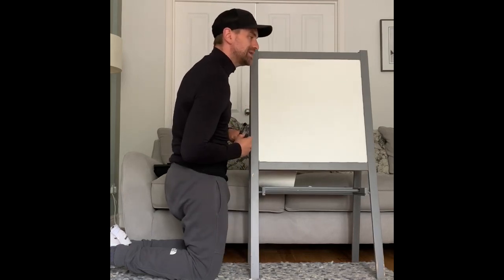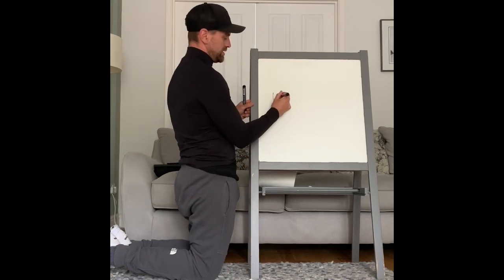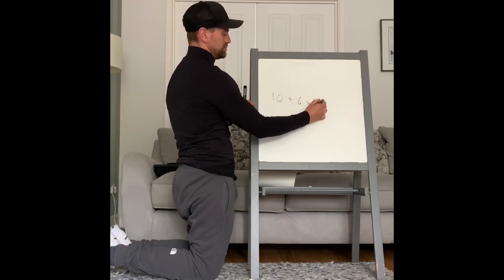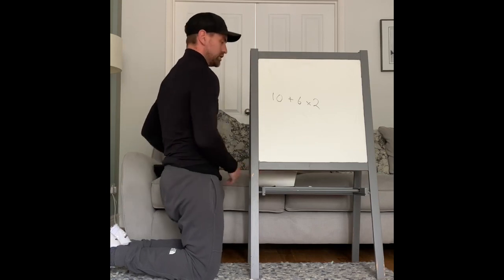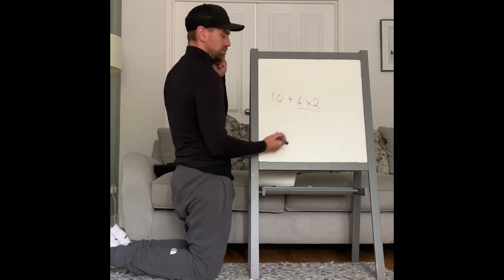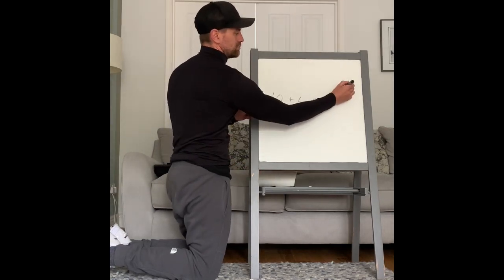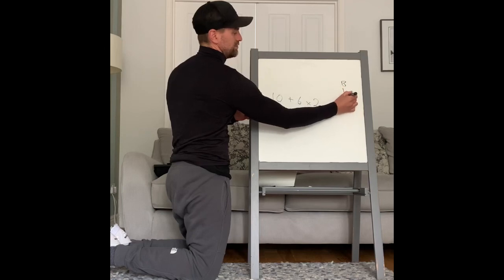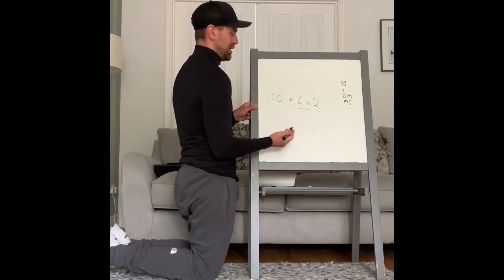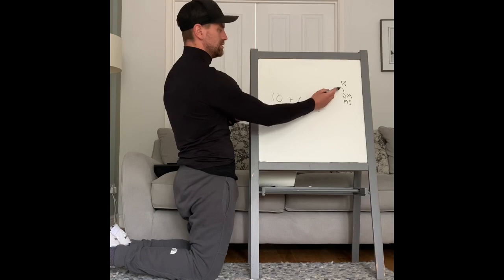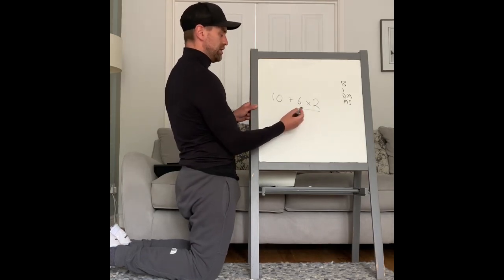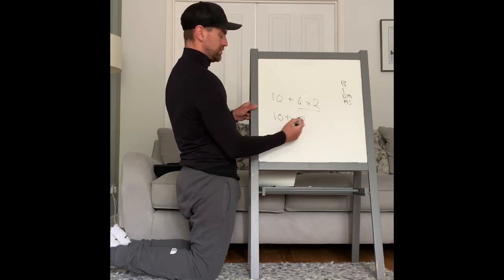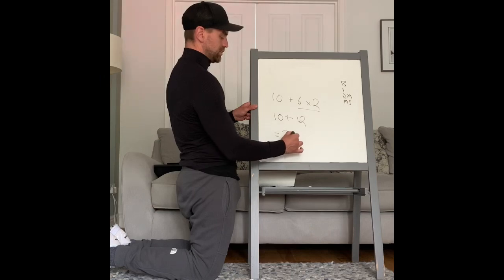Work out 10 + 6 × 2. What part of this do we need to do first? We need to do the multiply. Because remember, BIDMAS: Brackets, Indices, Divide and Multiply, Add and Subtract. There's no brackets, there's no indices, but I've got a multiply - so I need to do that first. So it becomes 10 + (6 × 2) = 10 + 12 = 22.